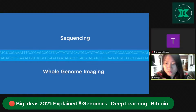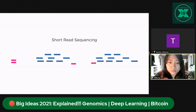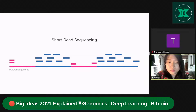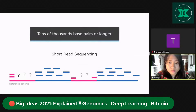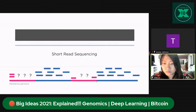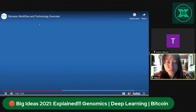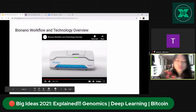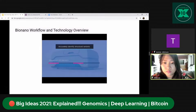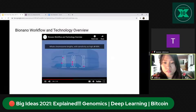In short-read sequencing — next-generation sequencing — DNA is read in short segments of about 150 base pairs and compared to a reference genome. It can characterize small variants, but structural variants are often tens of thousands of base pairs or longer, so short-read sequencing is not an accurate way to call them. Furthermore, two-thirds of the genome is repetitive, making structural variants in repeat regions often invisible by whole genome sequencing. Whole genome imaging with the Sapphire system takes an entirely different approach, accurately identifying structural variants from 500 base pairs to whole chromosome lengths with sensitivity as high as 99%.